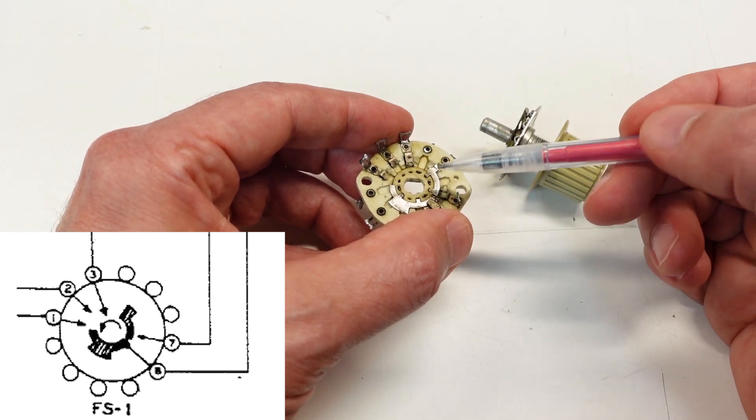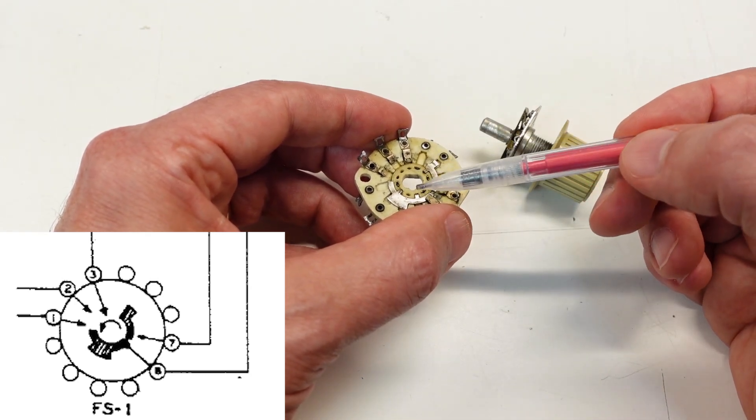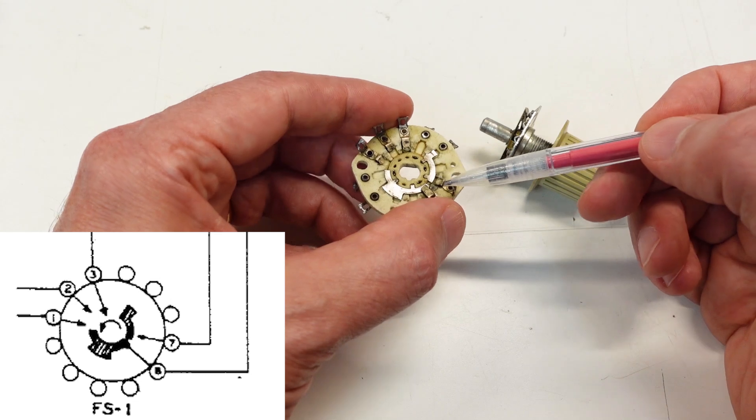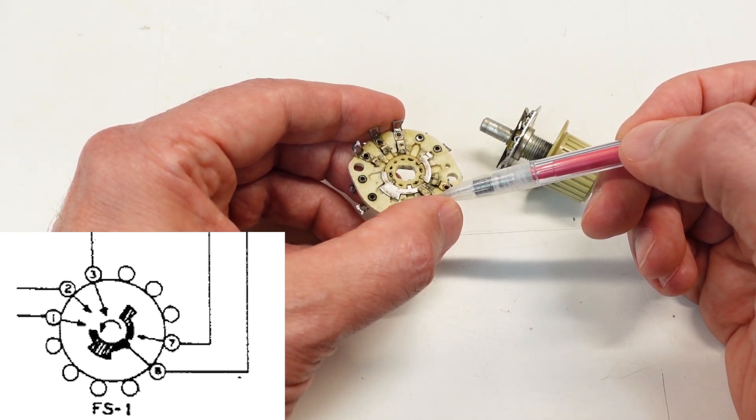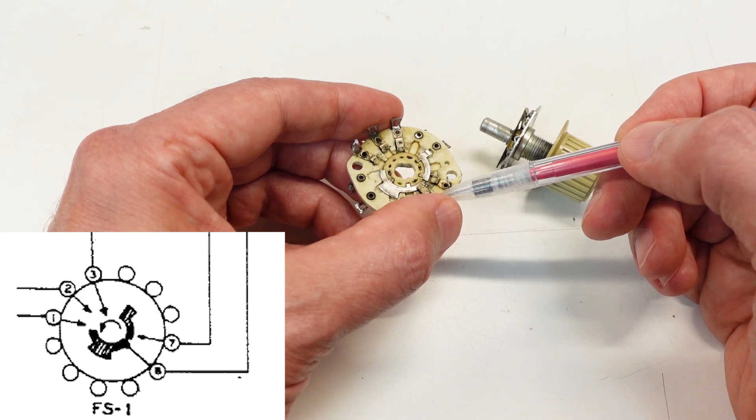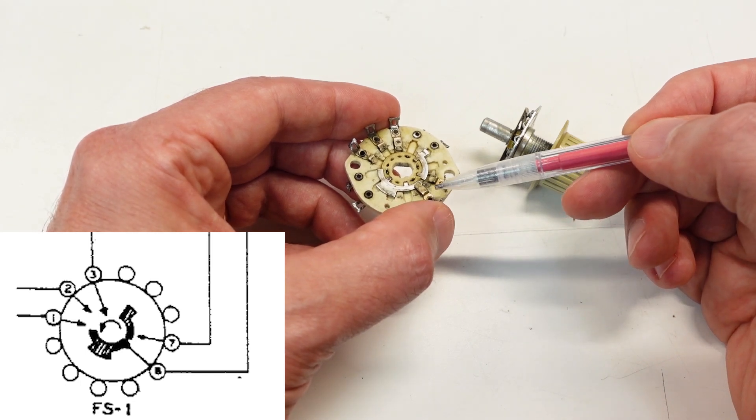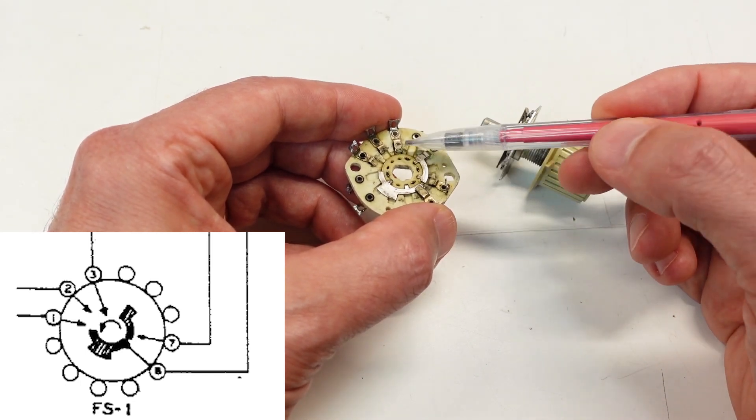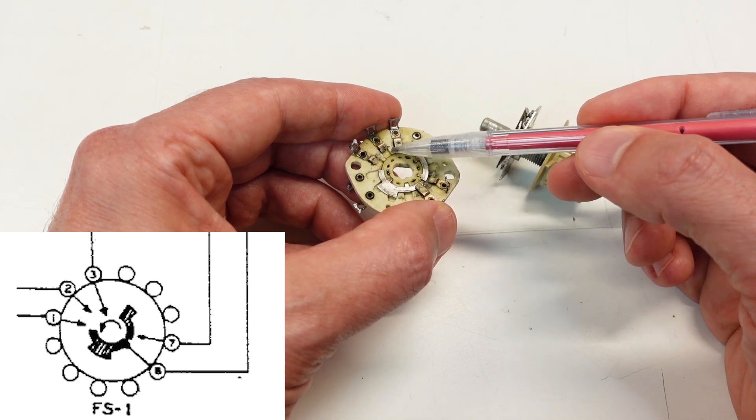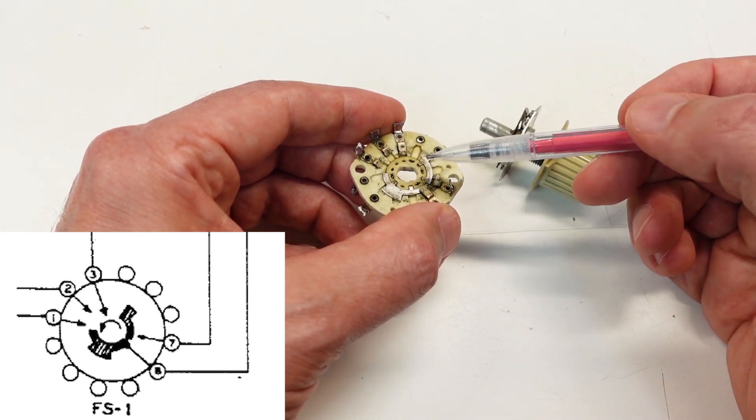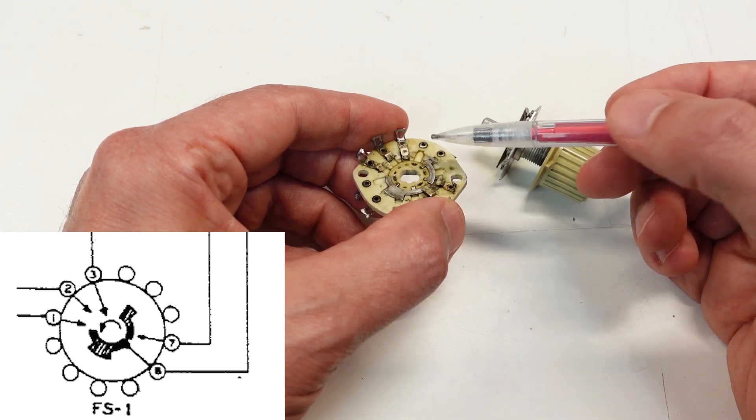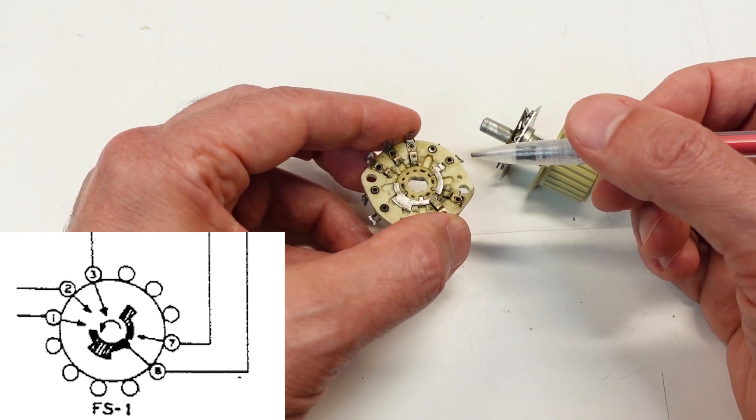Now there are two poles here on the FS1 side. This one down here in this position connects the key jack when you're in the tune and the AM and CW positions. And the other pole is up here, these contacts. And that's responsible for connecting the screen grid on the 6146 final tube to the cathode of V4. That's the modulator tube.